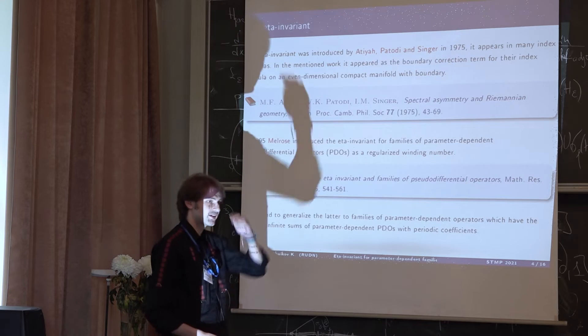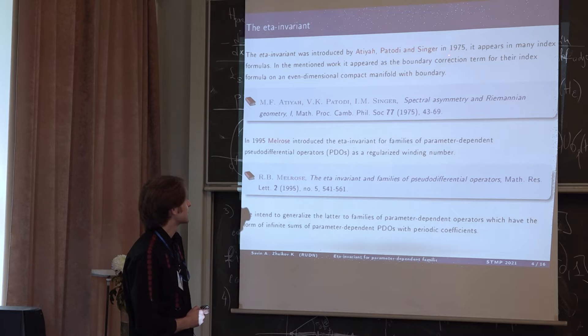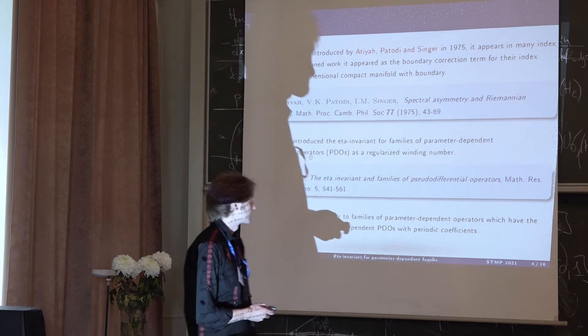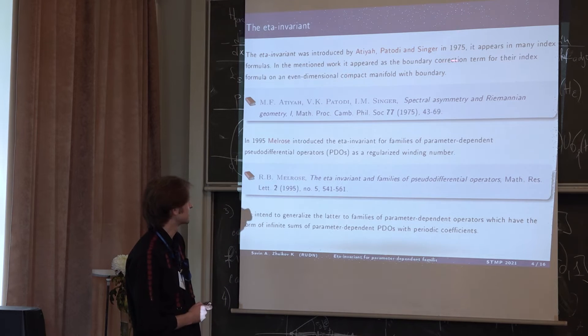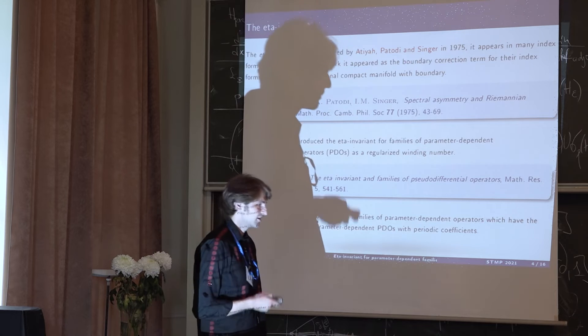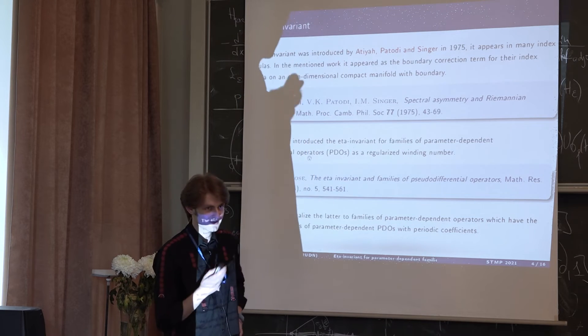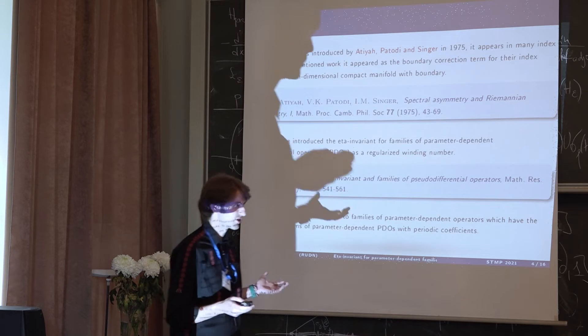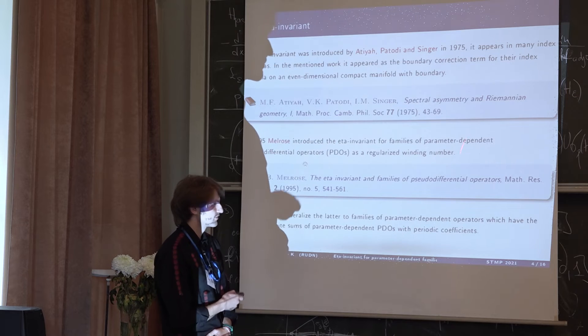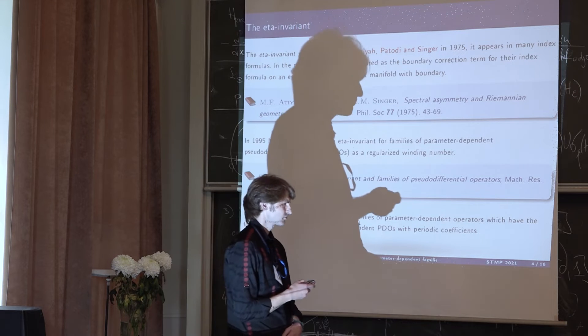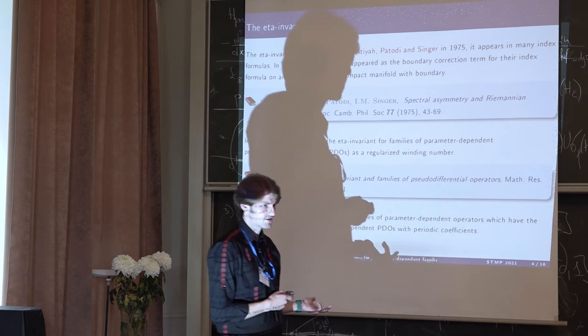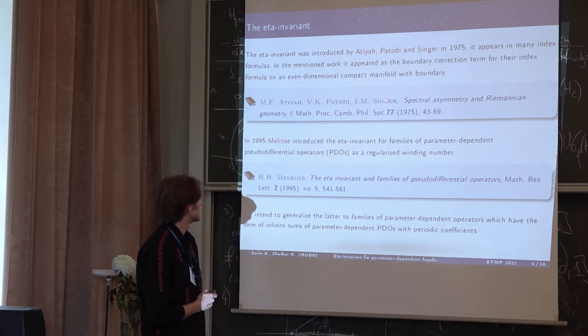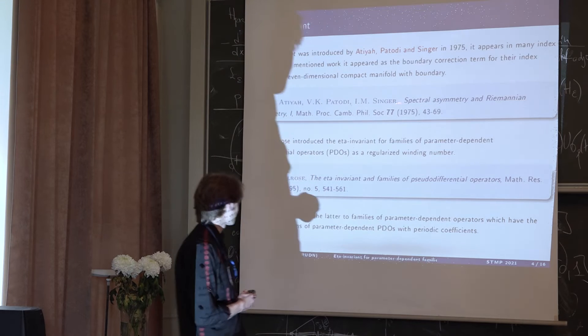Now about the eta invariant. It appeared in the famous work by Atiyah-Patodi-Singer in 1975. They considered elliptic self-adjoint operators and wanted to calculate the index. The eta invariant appeared as the boundary correction term for the index on an even dimensional compact manifold with boundary. Roughly speaking, there is a well-known notion of signature for matrices. These guys generalized the term of signature to infinite dimensional case. The eta invariant was an analytic continuation of the eta function, which coincides with the signature in finite dimensional case. But it's not the only definition that we can give to eta invariant.